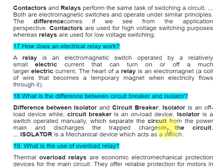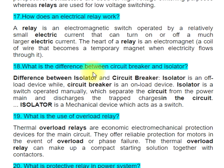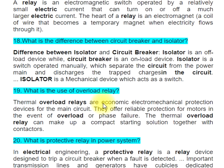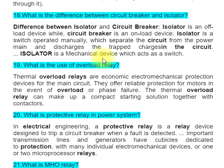Question 18: What is the difference between a circuit breaker and an isolator? An isolator is an off-load device while a circuit breaker is an on-load device. An isolator is a switch operated manually, which separates the circuit from the power main and discharges the trapped charges in the circuit. An isolator is a mechanical device which acts as a switch.